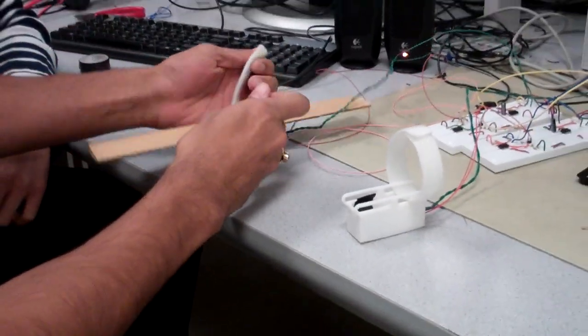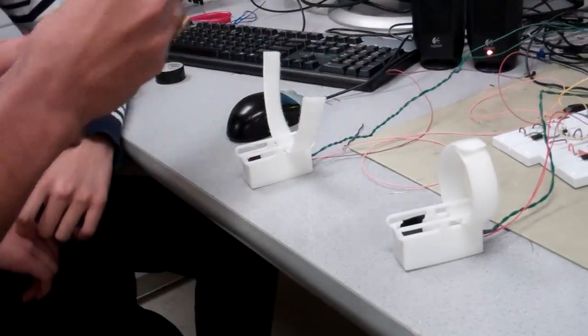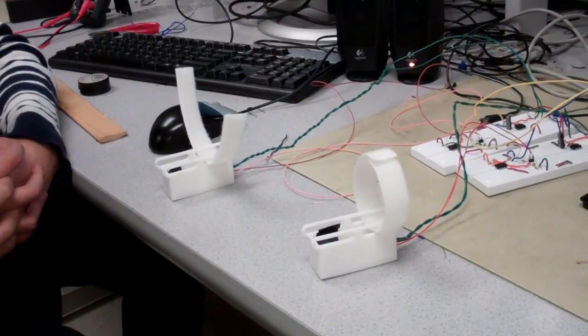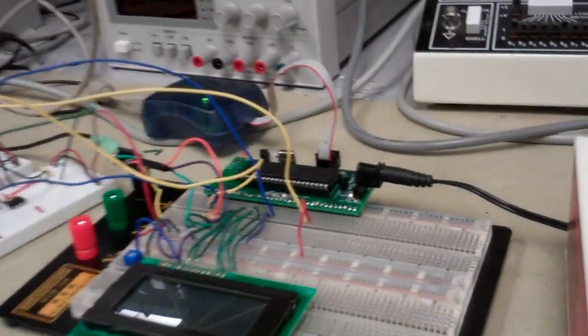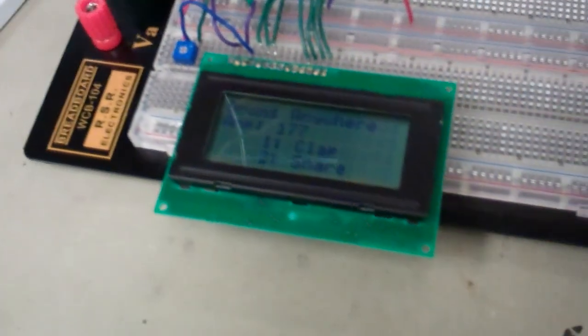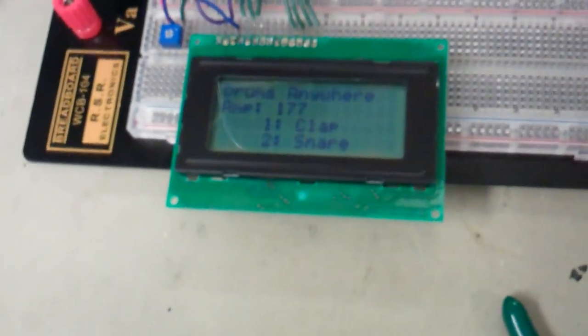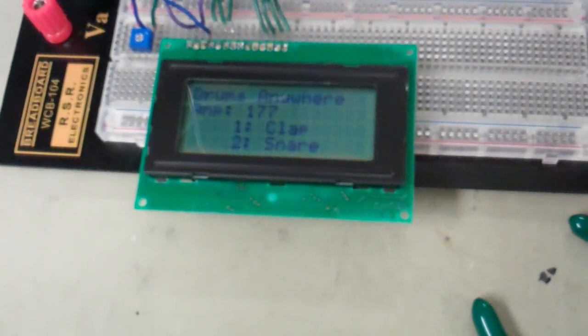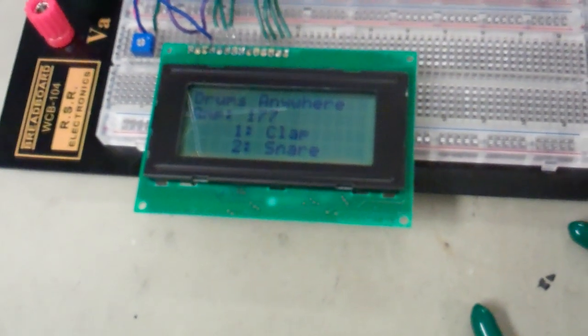And so you have sampled sounds. Yes, so we have two sampled sounds that are on the microcontrollers onboard memory. And if you look at the display screen, it actually shows you which sounds it's currently outputting. Those two are the only sounds we have on there right now. Rev2 will have more.